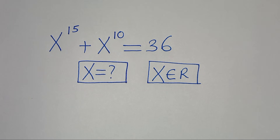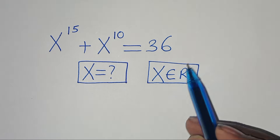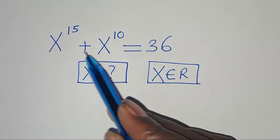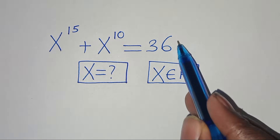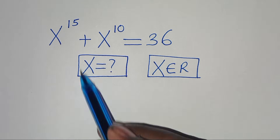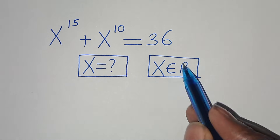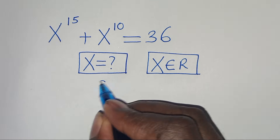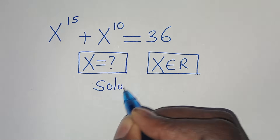Hello everyone, you are welcome to solve this nice algebra problem: x to the power of 15 plus x to the power of 10 is equal to 36. What is the value of x, given that x is a member of the real numbers? Let's provide a solution.